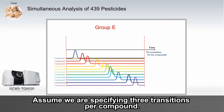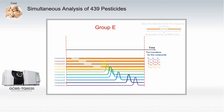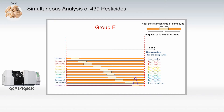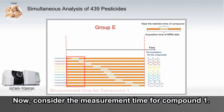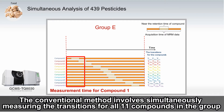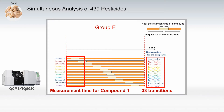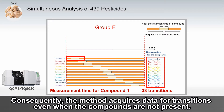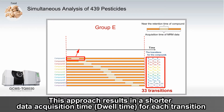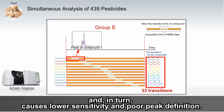Assume we are specifying 3 transitions per compound. Consider the measurement time for compound 1. The conventional method involves simultaneously measuring the transitions for all 11 compounds in the group, a total of 33 transitions. Consequently, the method acquires data for transitions even when the compounds are not present. This approach results in a shorter data acquisition time, or dwell time, for each transition and, in turn, causes lower sensitivity and poor peak definition.